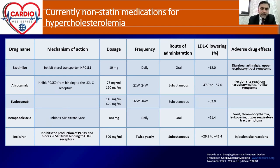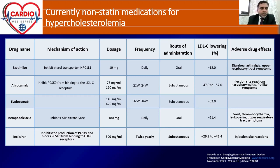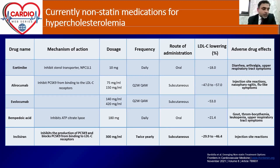Starting with ezetimibe, which is commonly available in Pakistan under different drug names, and now combination pills are coming: it inhibits the sterol transporter present in the small intestine and brain. Dose is 10 mg per day orally. LDL lowering is less than 18%. Side effects include diarrhea, arthralgias, and upper respiratory tract symptoms. Regarding PCSK9 inhibitors — proprotein convertase subtilisin kexin type 9 — the three agents currently available are alirocumab, evolocumab, and inclisiran.